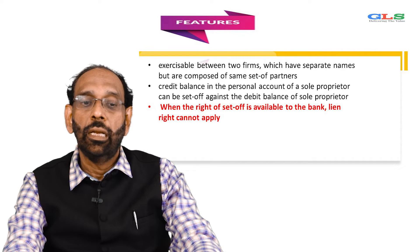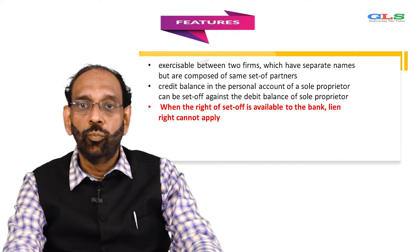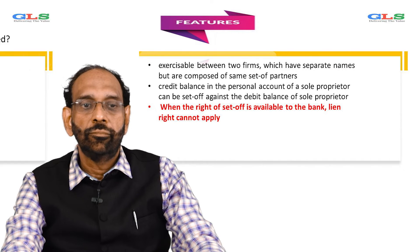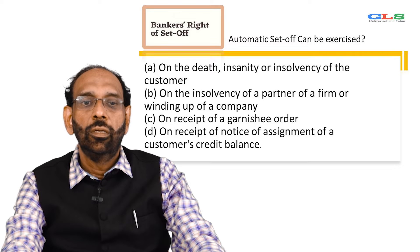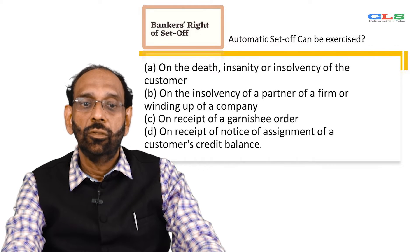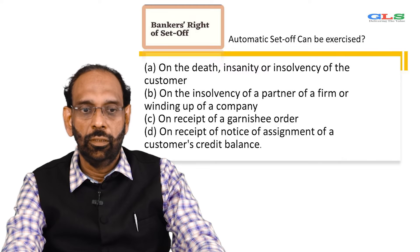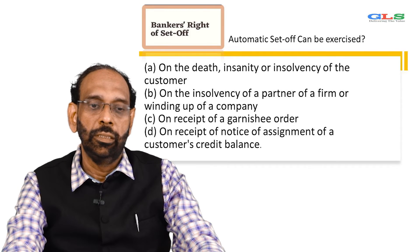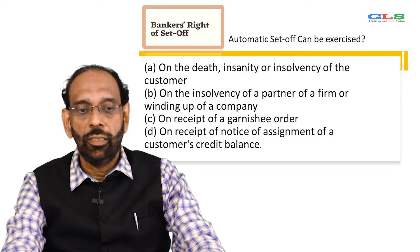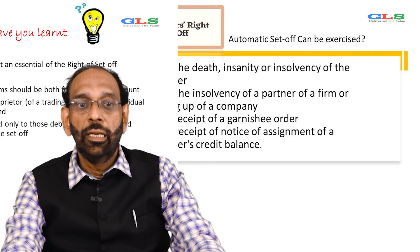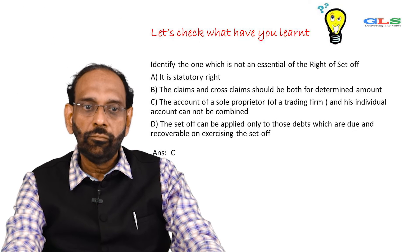You must understand that lien and set-off cannot be mixed simultaneously. Automatic set-off can be exercised on death, insanity, or insolvency of the customer; on the insolvency of a partner of a firm or winding up of a company; on receipt of a garnish order; and on receipt of a notice of assignment of a customer's credit balance.